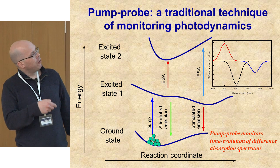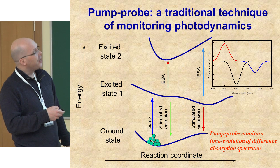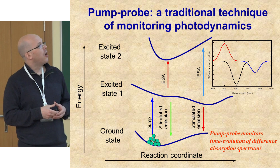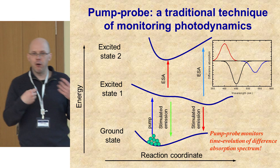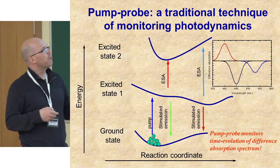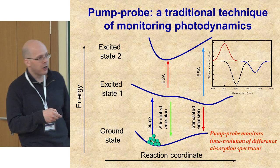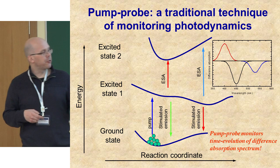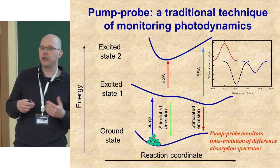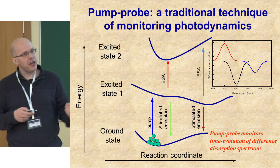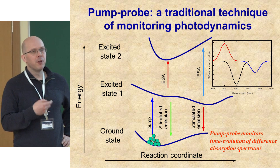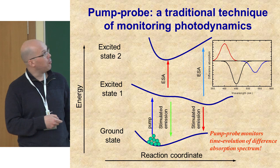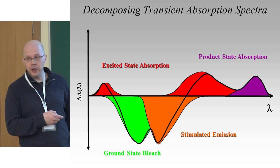Since these molecules are doing something with the energy provided, they will evolve on the excited state potential and move somewhere. The energy gaps between ground and excited states, and between excited states, will differ, so these signals will shift and hold information about what's happening to the molecule — when is it going back to the ground state, because it will eventually probably do so. Traditional pump-probe, to summarize, is basically a way of monitoring the difference absorption spectrum as a function of time, and the dynamics of this difference absorption spectrum provide information about what's happening with the molecule after excitation.